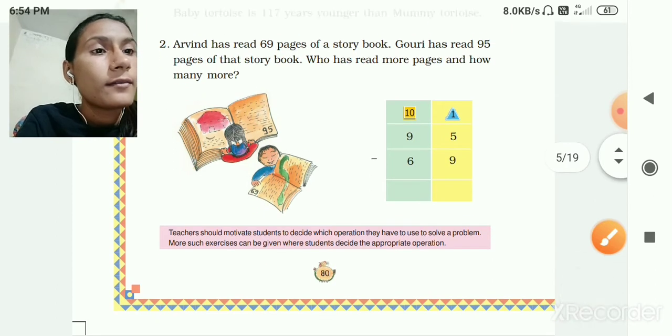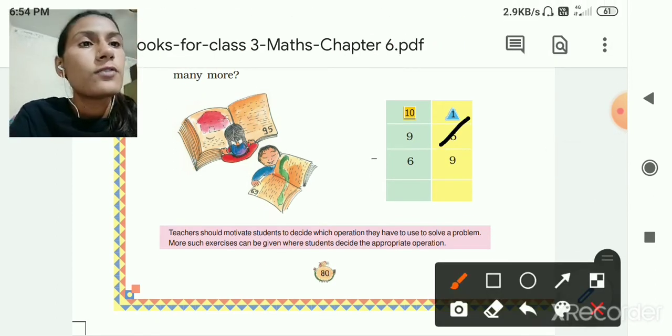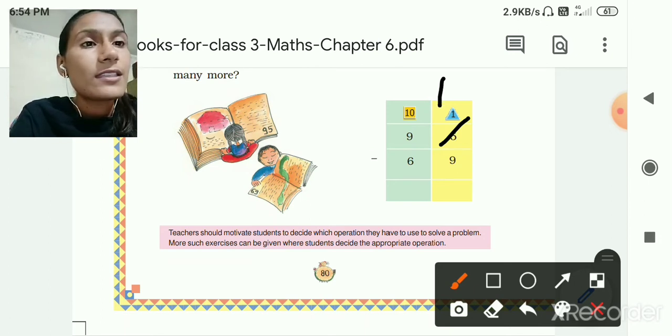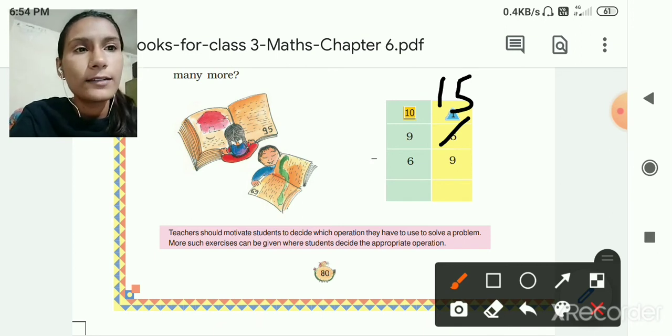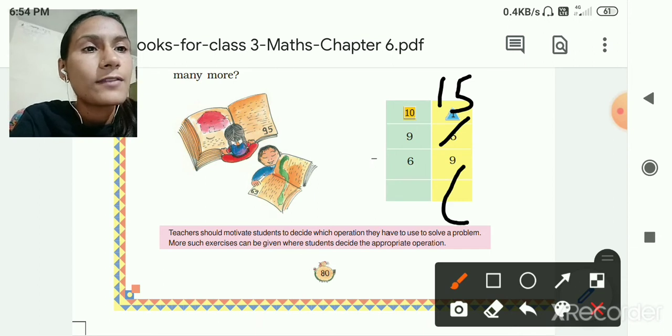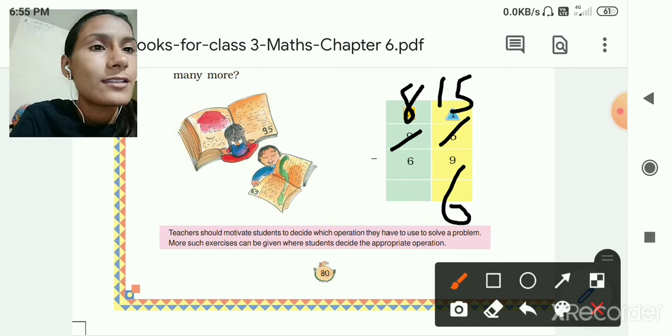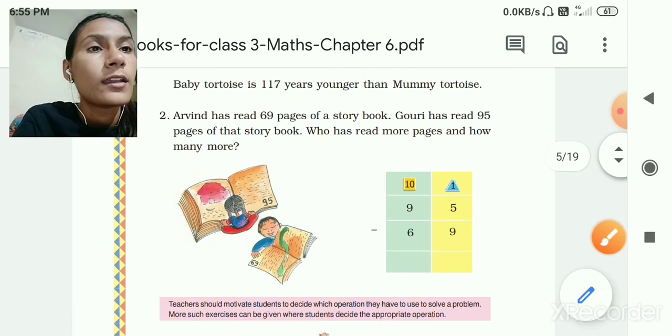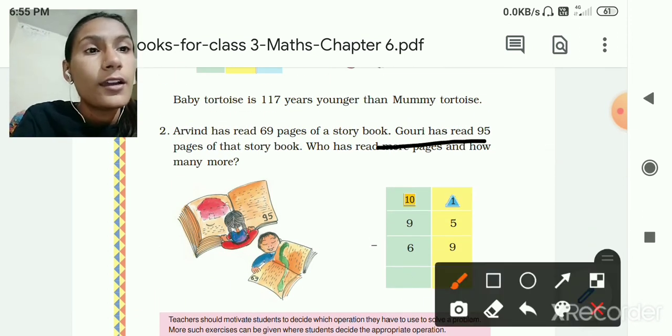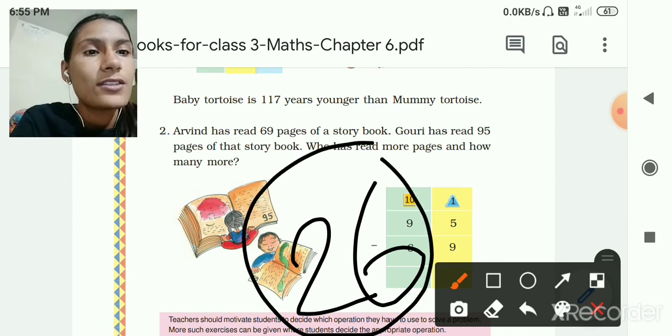Here 5 minus 9, is that possible? No. So here we have to borrow 10. 10 plus 5 is equal to 15. 15 minus 9 is equal to how many? 15 minus 9 is equal to 6. Then here we had borrowed, so here we have to cut. 9 minus 1 is equal to 8. Now 8 minus 6 is equal to 2. So 26 pages. Gauri has read more pages and how many pages? 26 pages. She has read more.